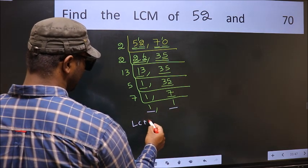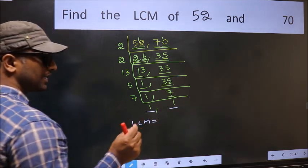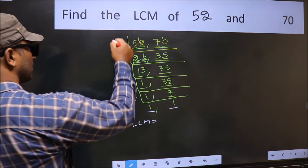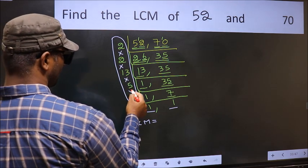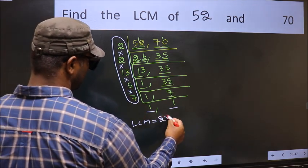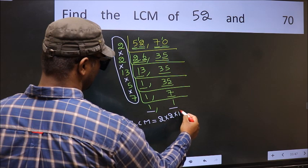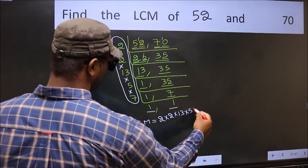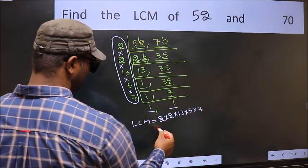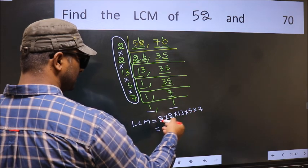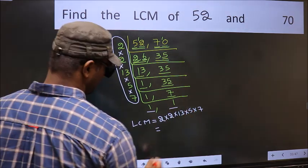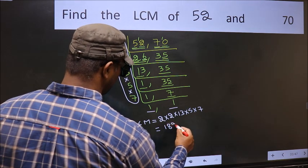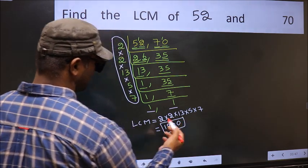So our LCM is the product of these numbers: 2×2×13×5×7. When we multiply these numbers, we get 1820 as our LCM.